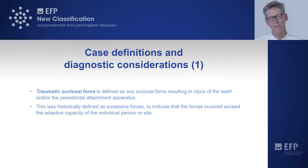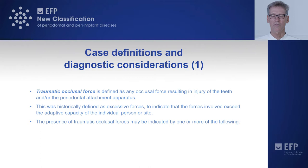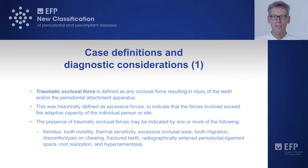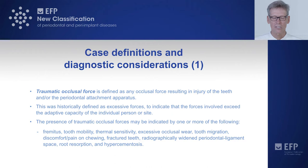The presence of such a traumatic occlusive force may be indicated by one or more of the following: fremitus, tooth mobility, thermal sensitivity, excessive occlusive wear, tooth migration, discomfort or pain on chewing, fractured teeth, radiographically widened periodontal ligament space, root resorption, and hypercementosis.